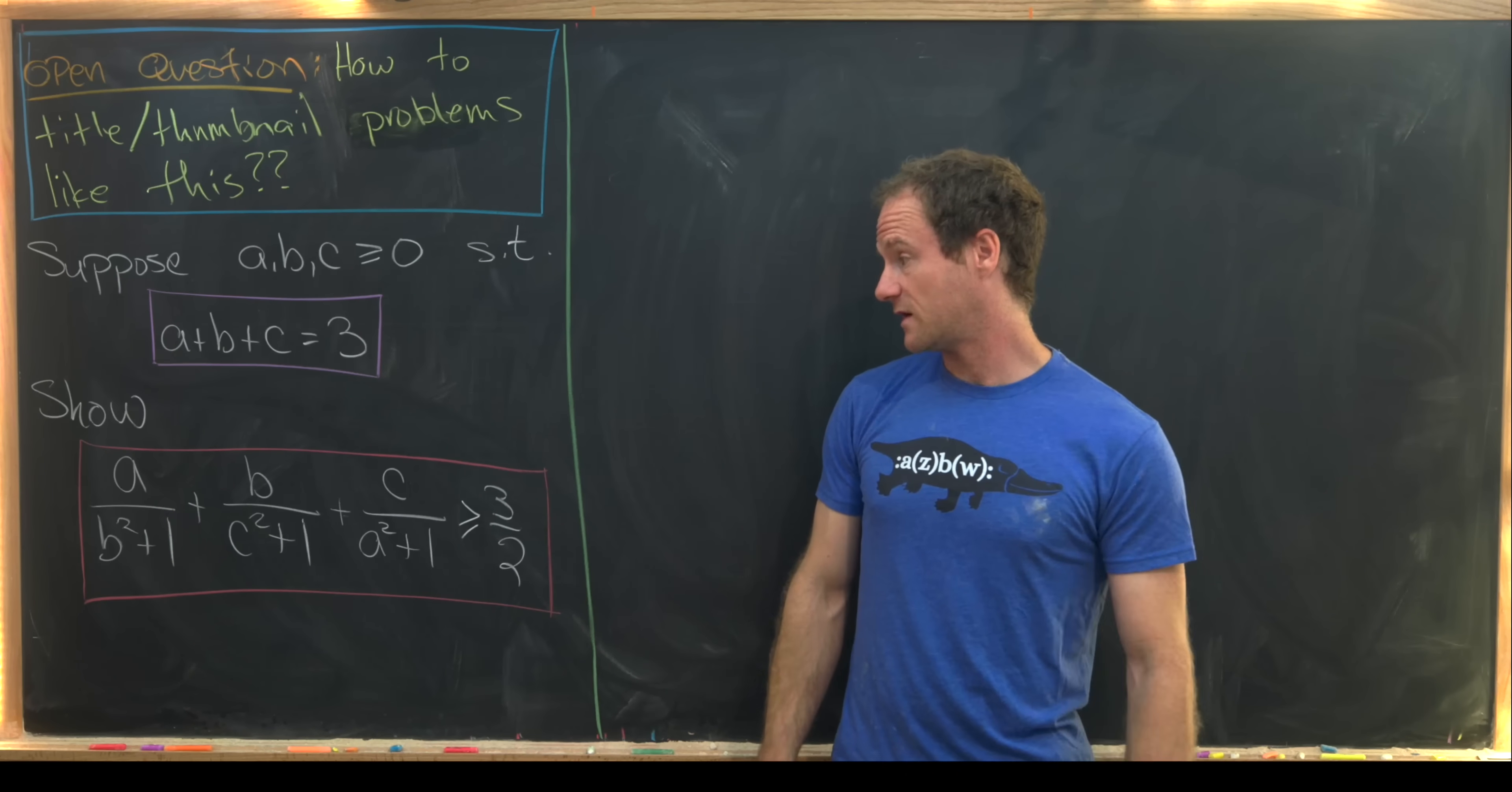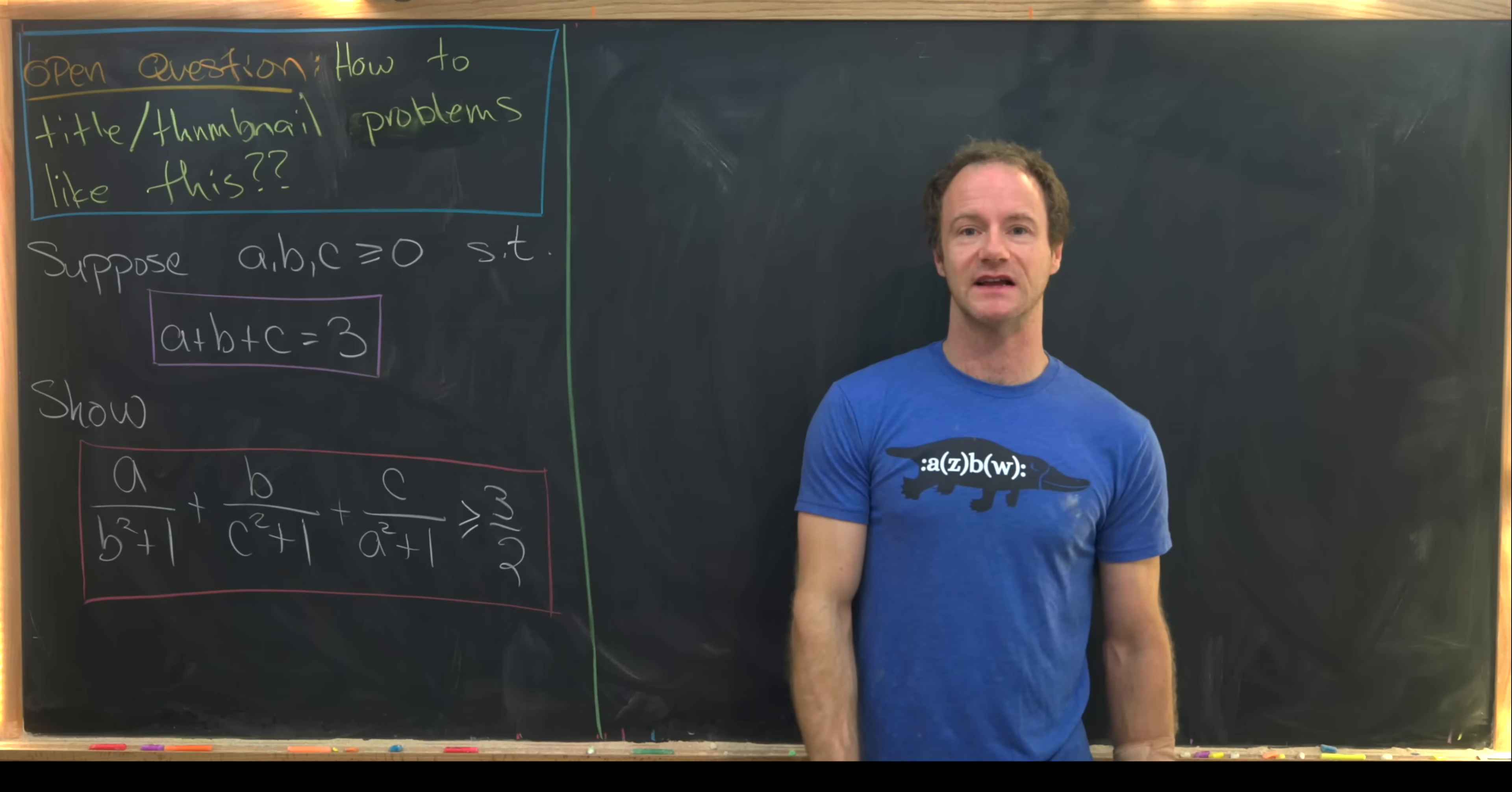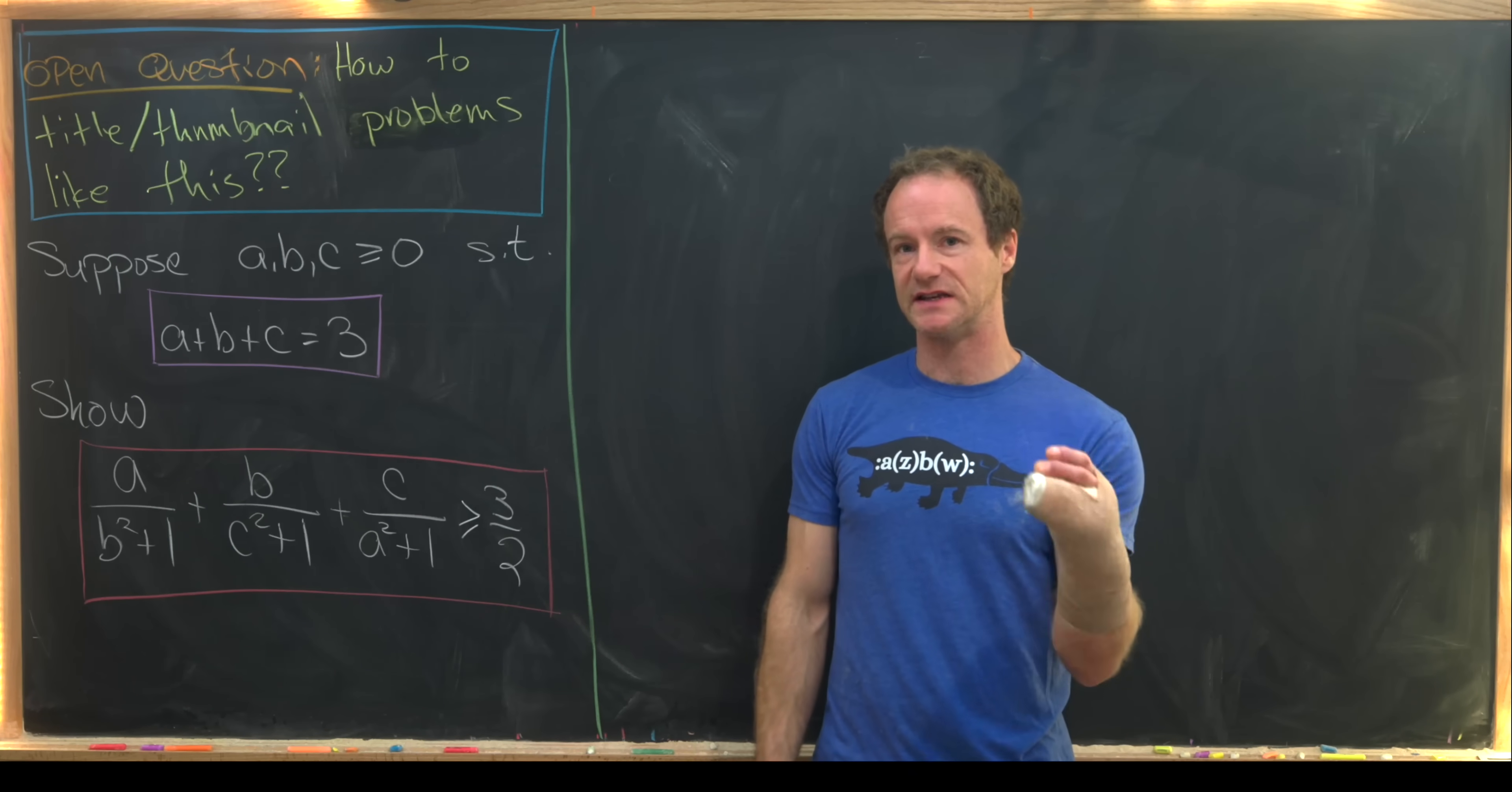So first off, I want to notice that there's a bunch of symmetry built into the left-hand side of this would-be inequality. So if we do a cyclic permutation sending a to b, b to c, and then c back to a,